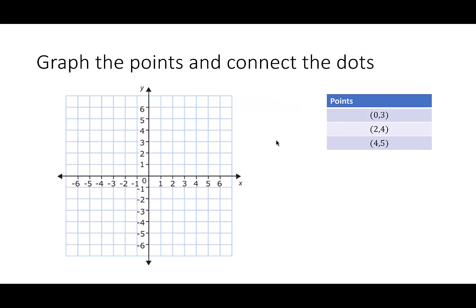Now we're ready to graph the points and connect the dots. We'll start with (0, 3), then we'll put in (2, 4), and finish with (4, 5). Connect the dots together, and don't forget to put the arrows to show they continue.